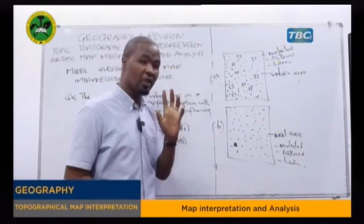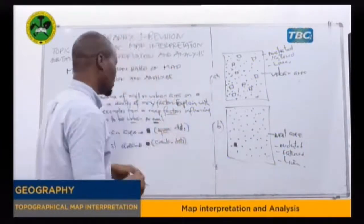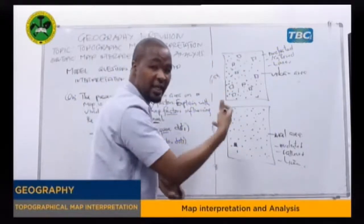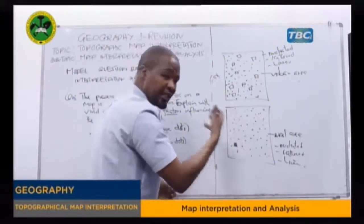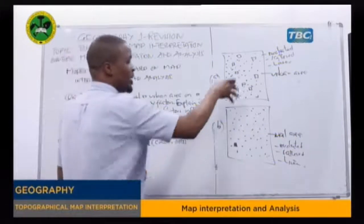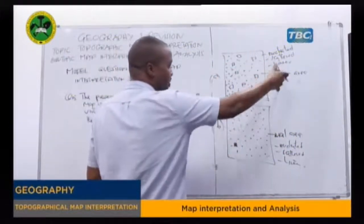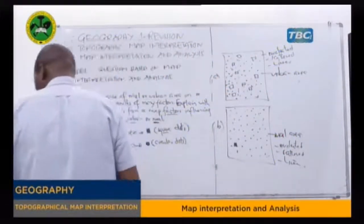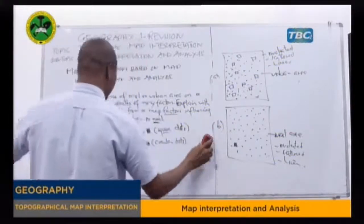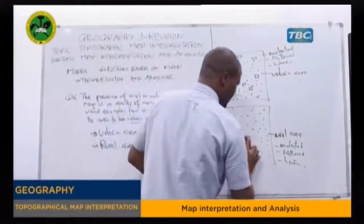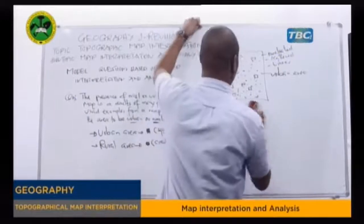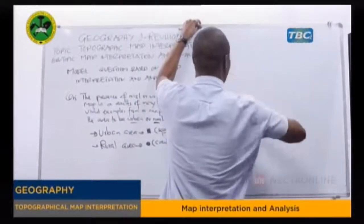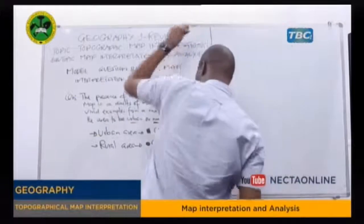The question we need to answer does not require us to explain the types of settlement found on a map. It requires us to explain the factors that have influenced the area on a map to be either urban or rural. So let's see the factors that influence an area on a map to be either urban or rural.